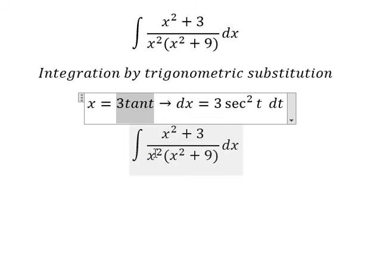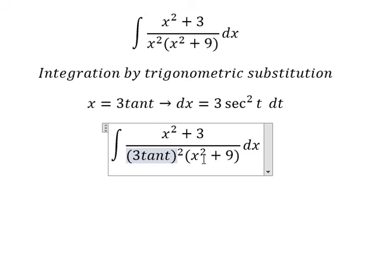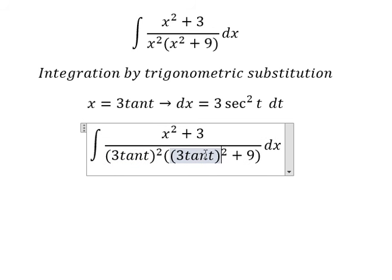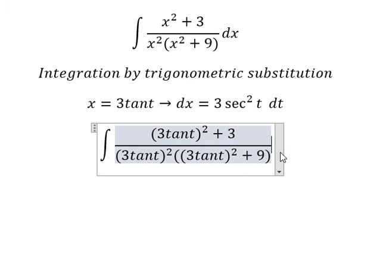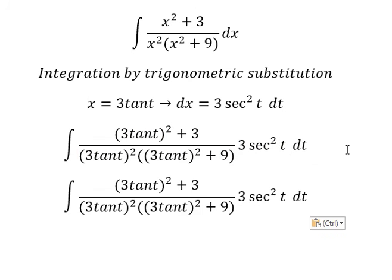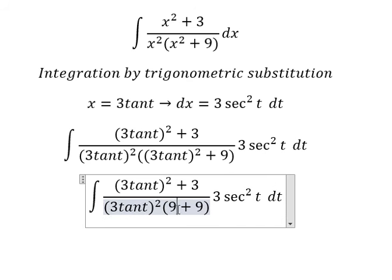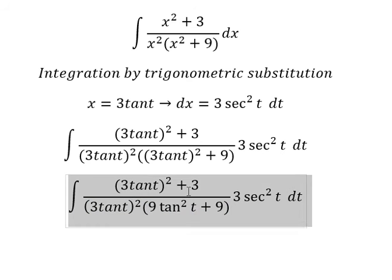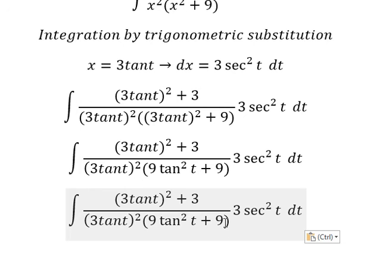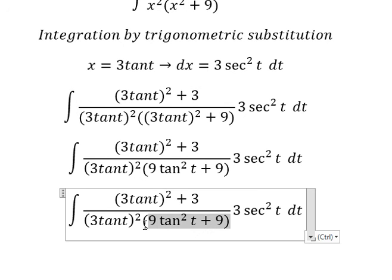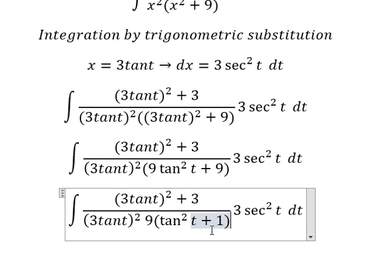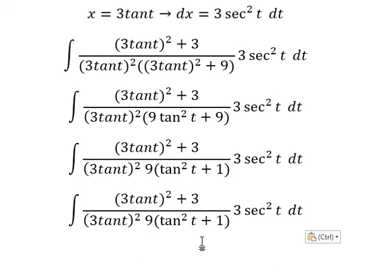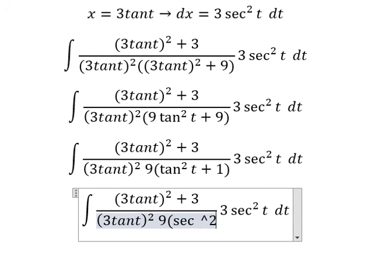So we put this one in here, and here, and dx we change for this one. This one we change for 9 times tan squared. Number 9, we can do factorization, and this one we change for secant t squared.